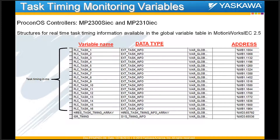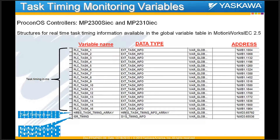Millisecond resolution may not be good enough for what you're trying to analyze in terms of how much time each task takes. It has been based on the Mechatrolink resolution for Proconos-based controllers — the 2300 SIEC and the 2310 IEC controllers. Starting in MotionWorks IEC 2.5, in the global variable worksheet, two new data types have been added: high_res_task_timing_info_array and sys_timing_info_array.